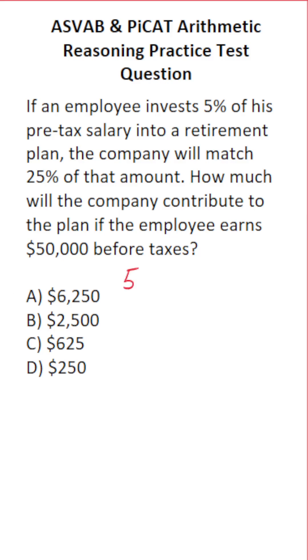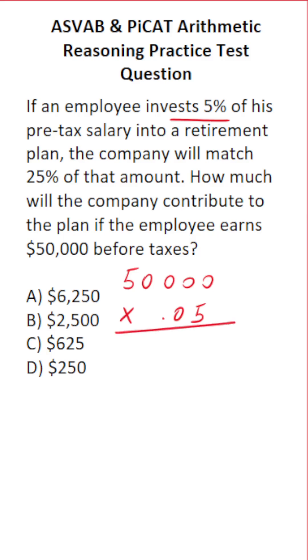First, we're going to take $50,000 and multiply it by the 5% that the employee invests. 5% as a decimal is 0.05.